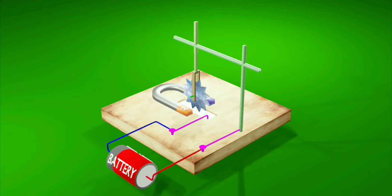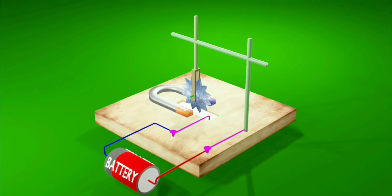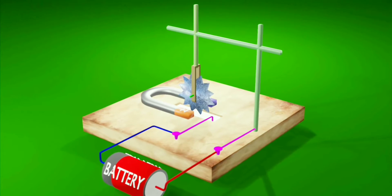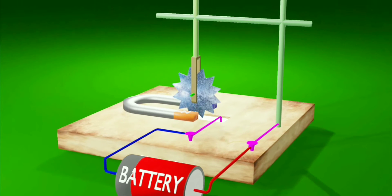Note that a closed electric circuit has been created, and a current can flow through it. Thus, Barlow's wheel is formed.